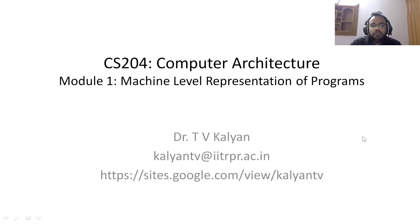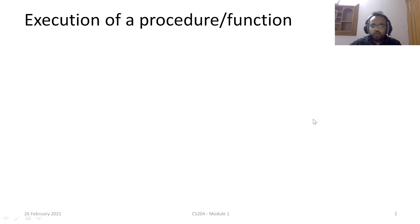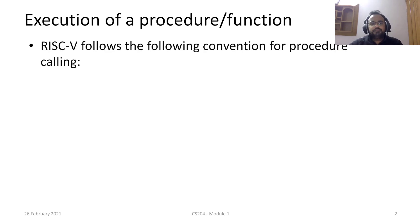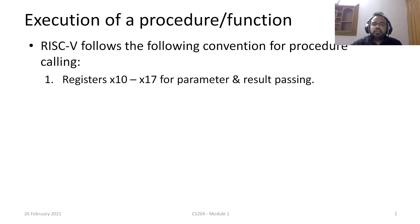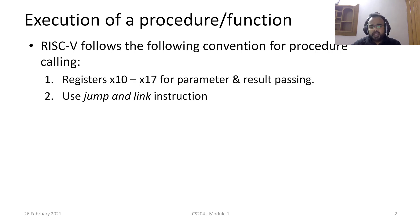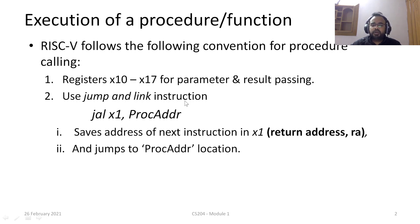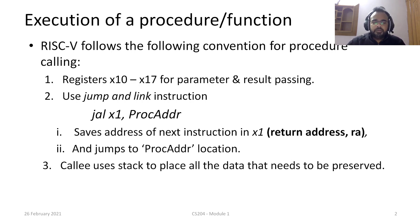Hello students. In the previous lecture we looked at the stack and how it helps us in handling procedures. Let's continue the topic further. A quick recap: the convention that RISC-V follows is that registers X10 to X17 are for parameter passing and results passing. We would typically use the JAL instruction, which looks something like JAL X1, proc_address, where X1 saves the address of the next instruction following the JAL, and proc_address is the address of the first instruction of the procedure.